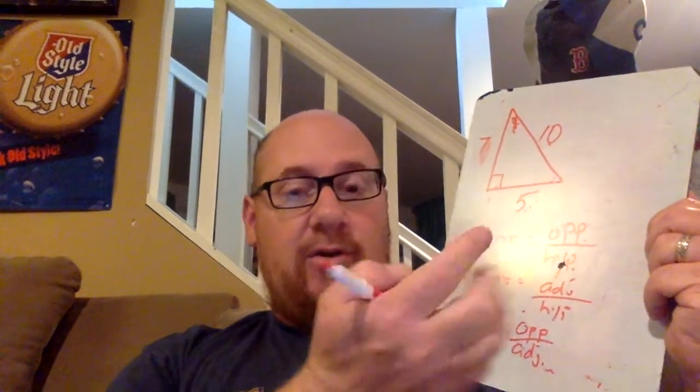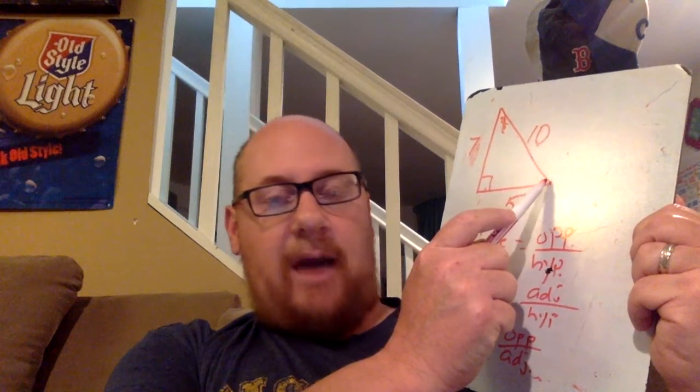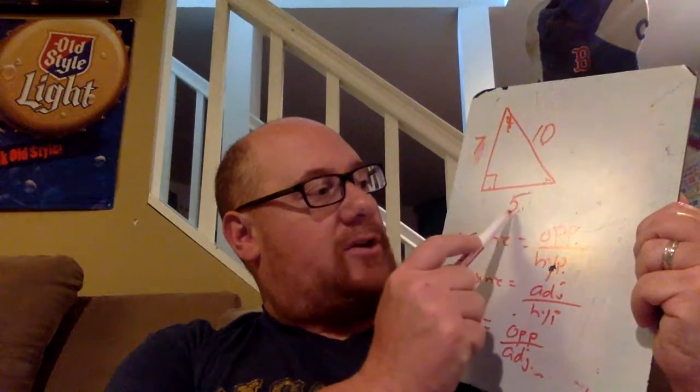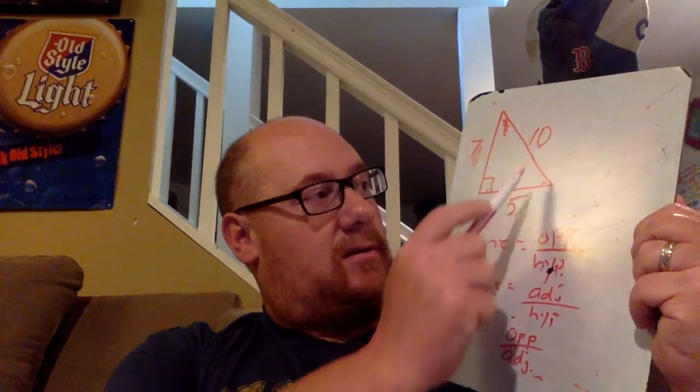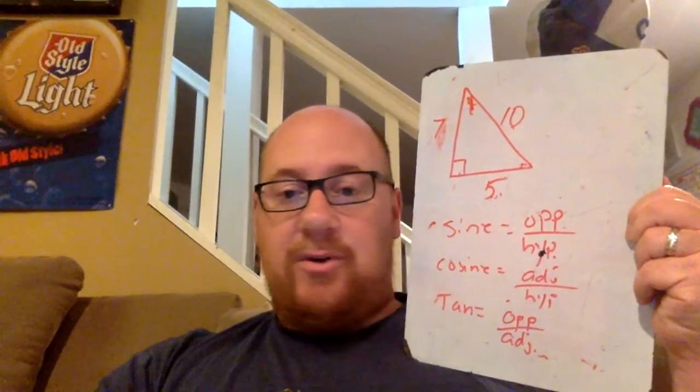Now these change if you look at different angles. For example, if you're missing this angle, opposite over adjacent, or adjacent over hypotenuse. That's all that we're doing today.